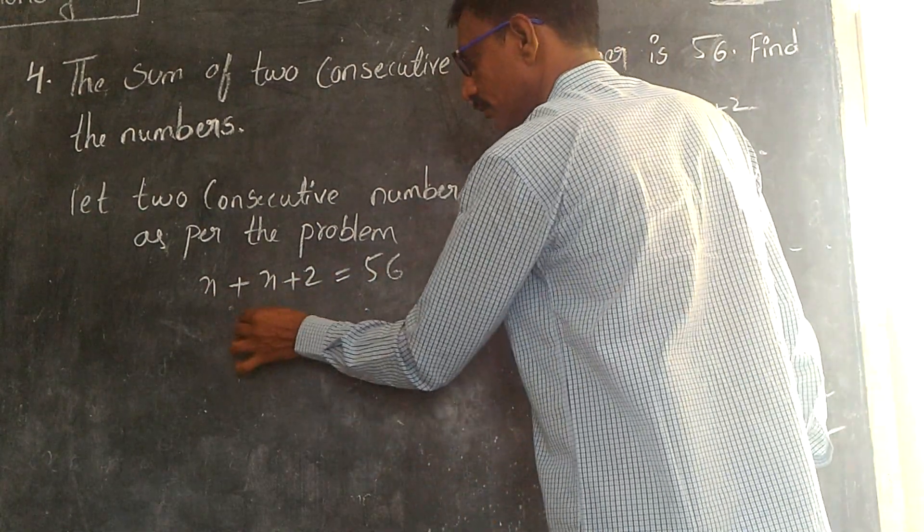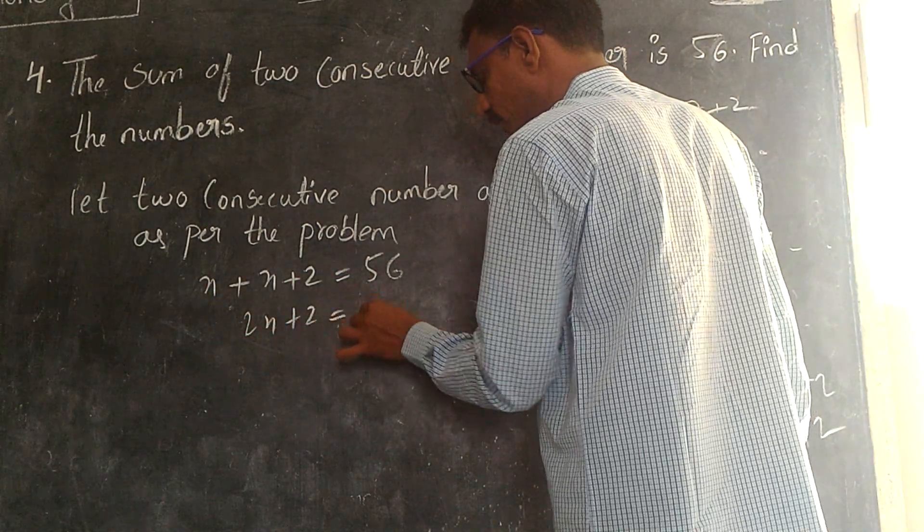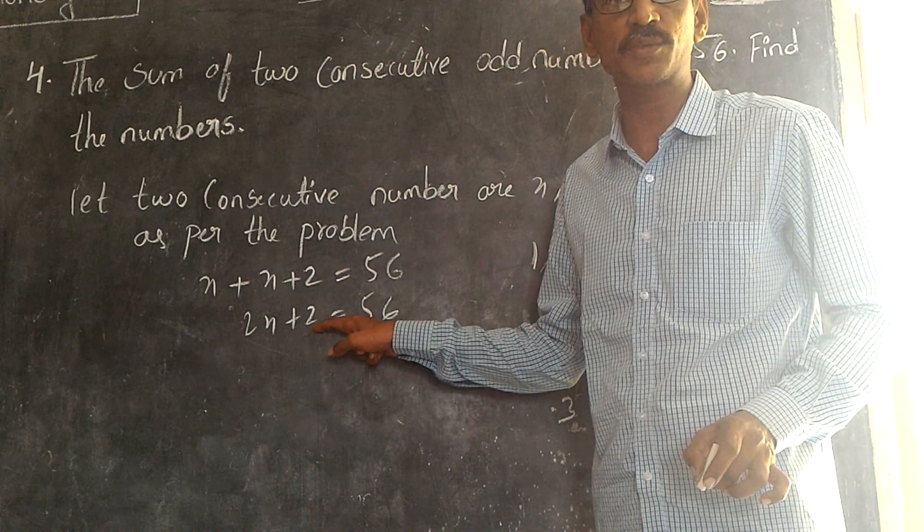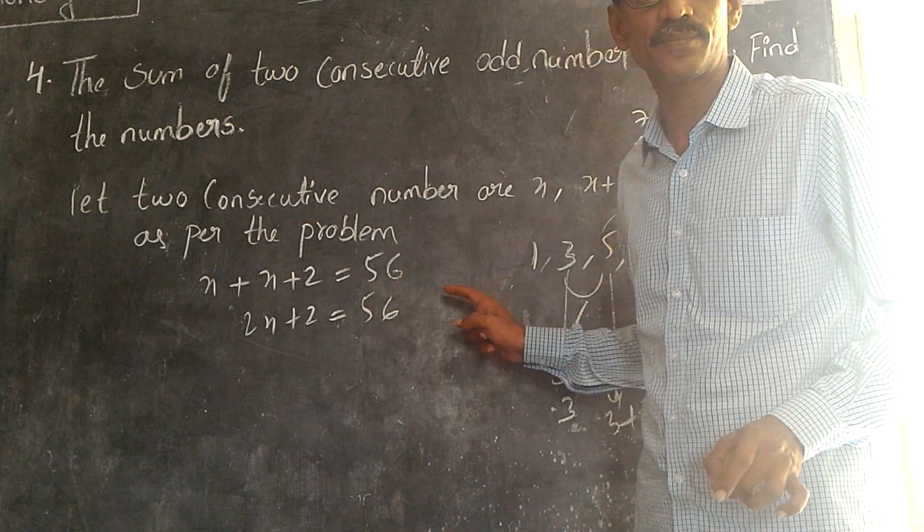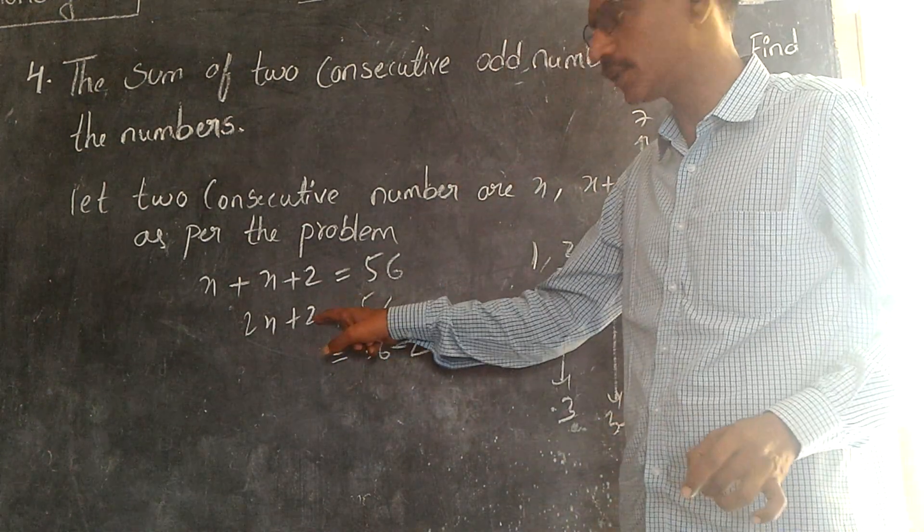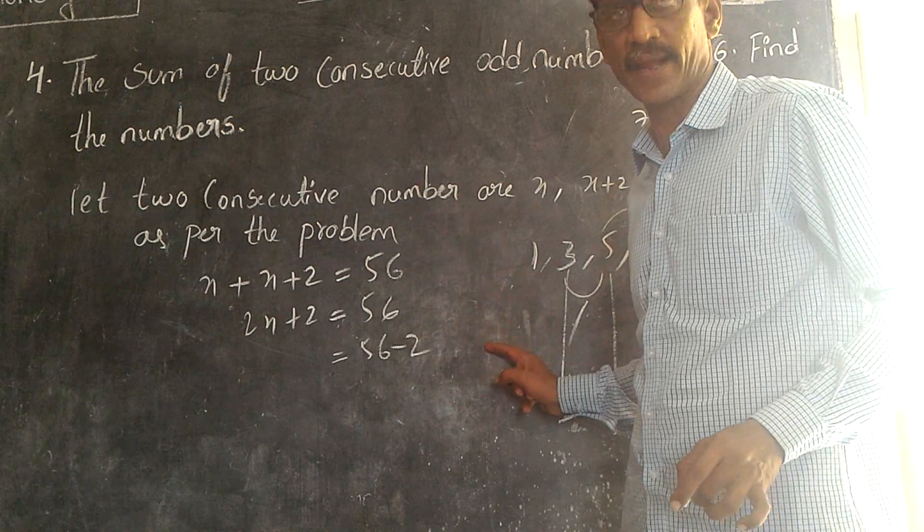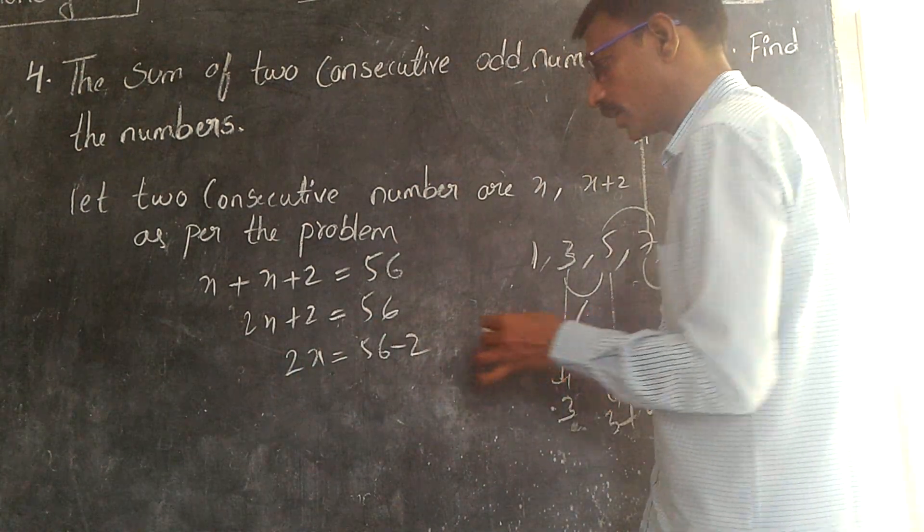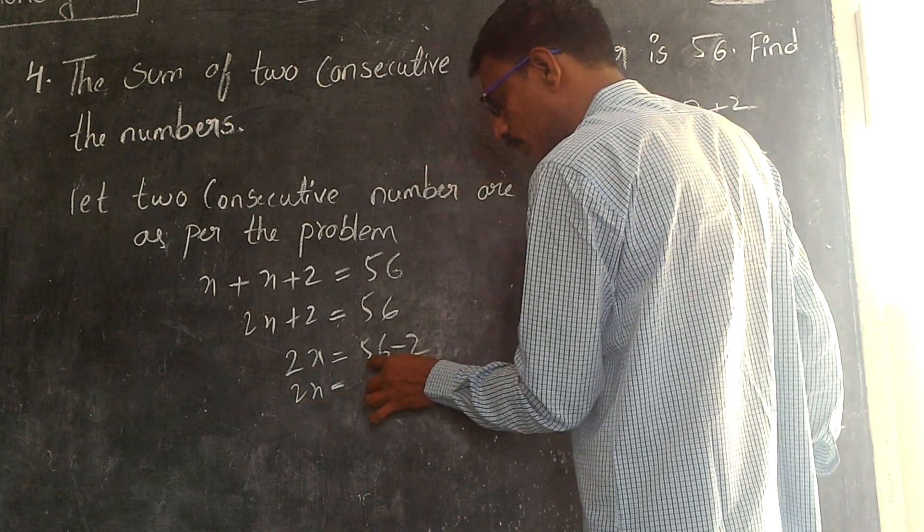X plus x, two x plus two is equal to fifty-six. This is plus two. By transposing this we get minus. Fifty-six minus two. This plus two will go this side minus two. Then we have two x.